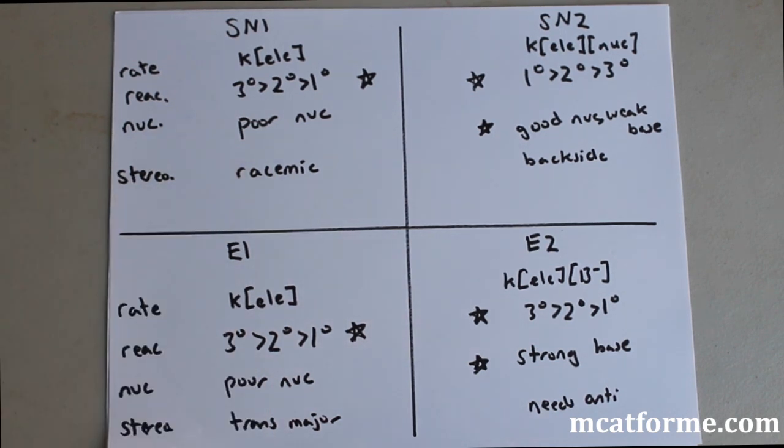We're going to go over those. Stereochemistry for SN1: racemic, because we form that carbocation and it's a sp2 hybridized carbon. There's no preference for R or S, so we're going to have a 50-50 mixture. Versus SN2, which is a backside attack. So we're going to have an inversion of stereochemistry. So if it started as R, now it's going to be converted to S.